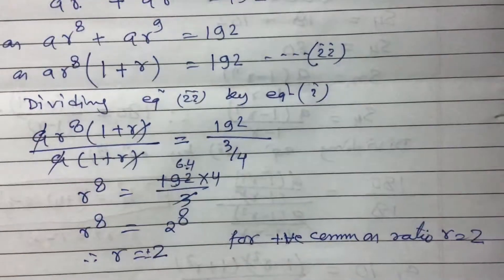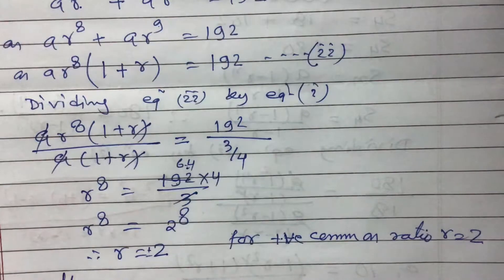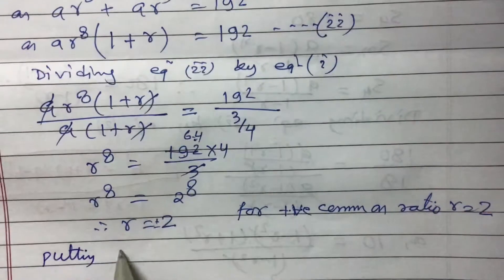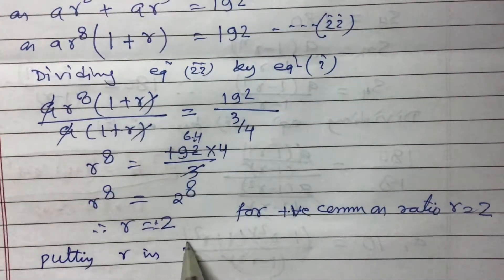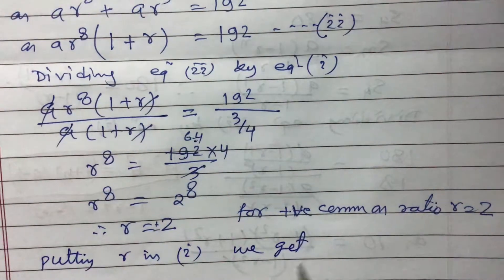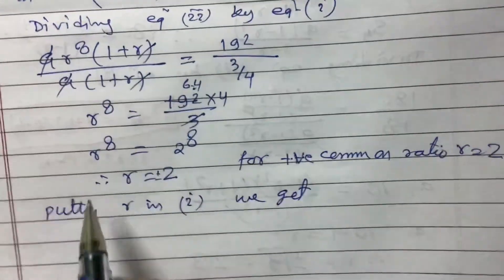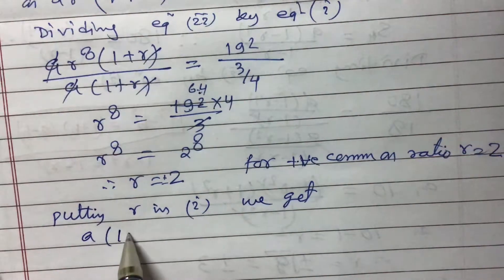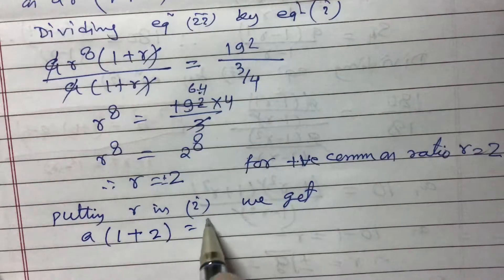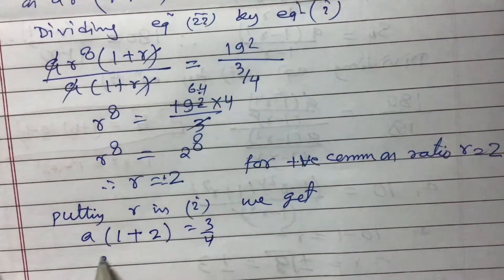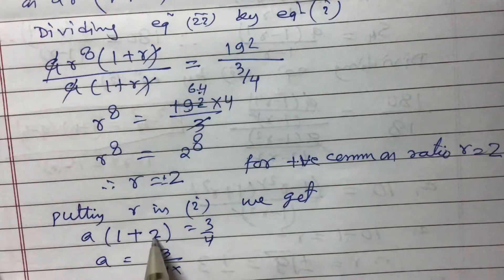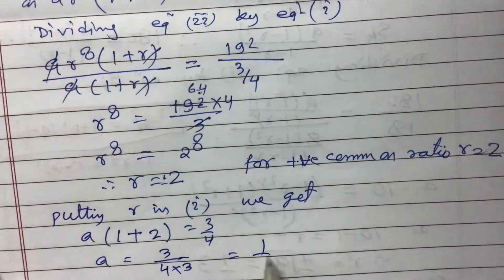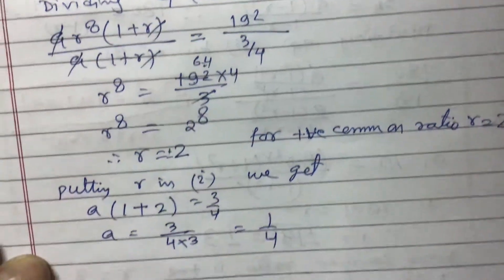Now substituting the value of r into Equation 1 to find a: a(1 + r) = 3/4, so a(1 + 2) = 3/4, giving a × 3 = 3/4. Therefore a = 1/4.